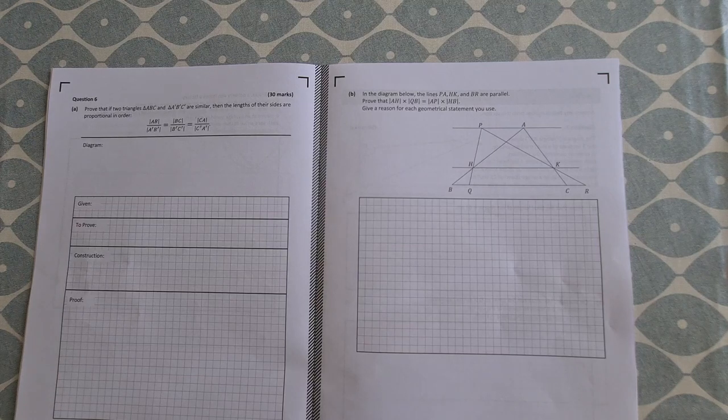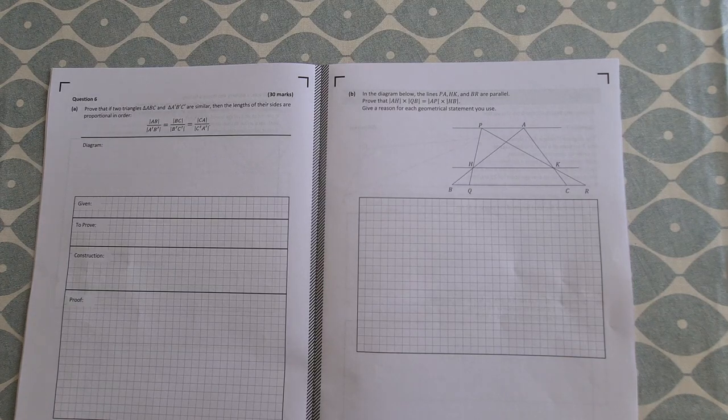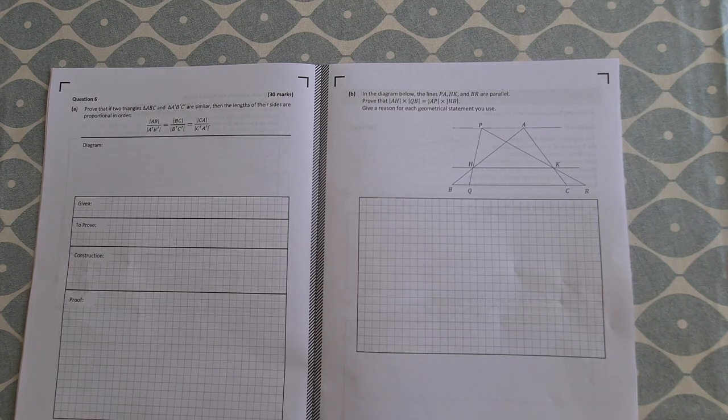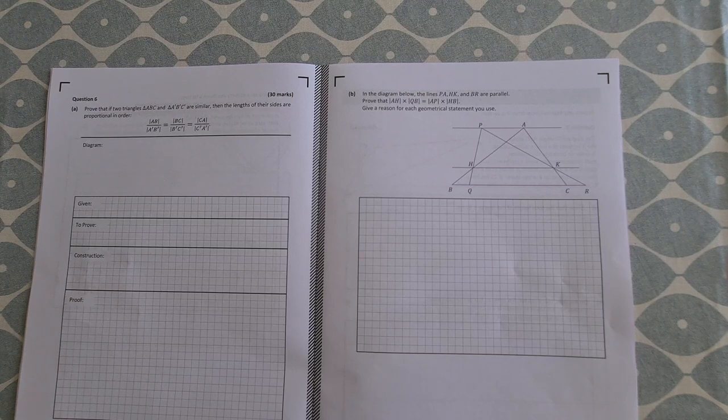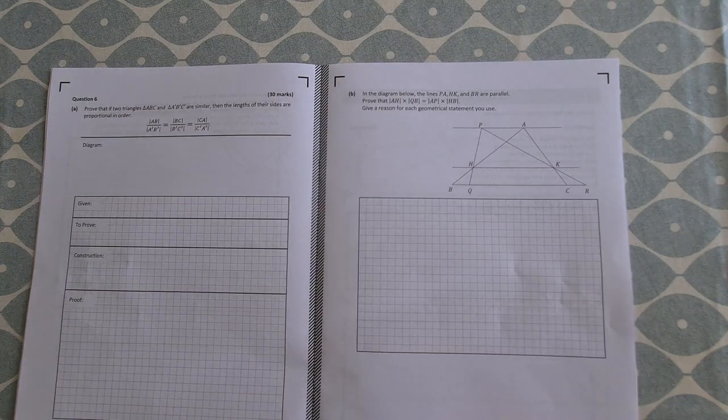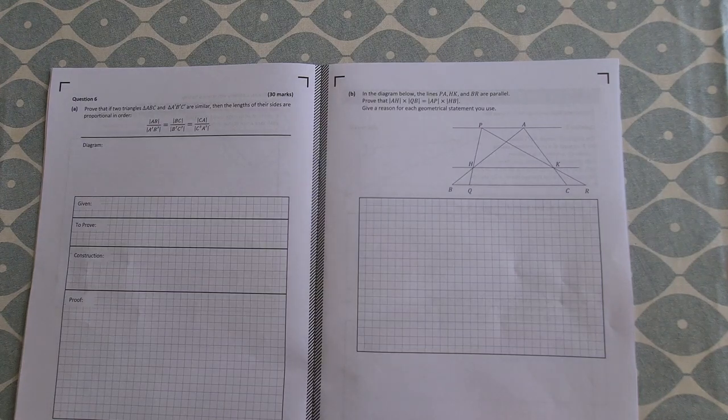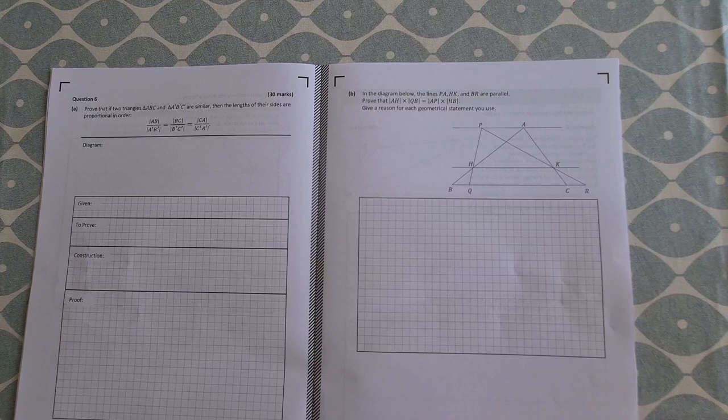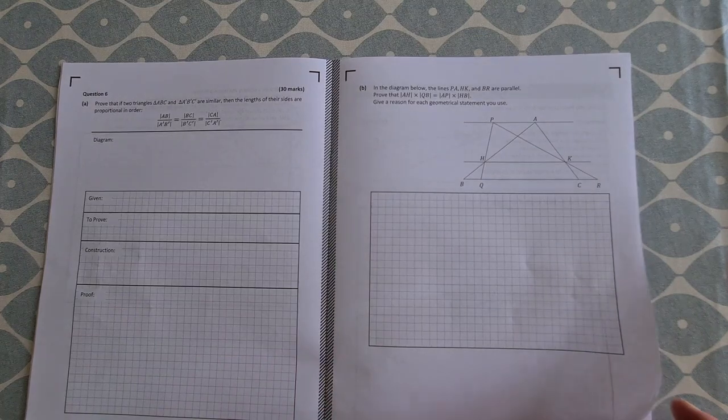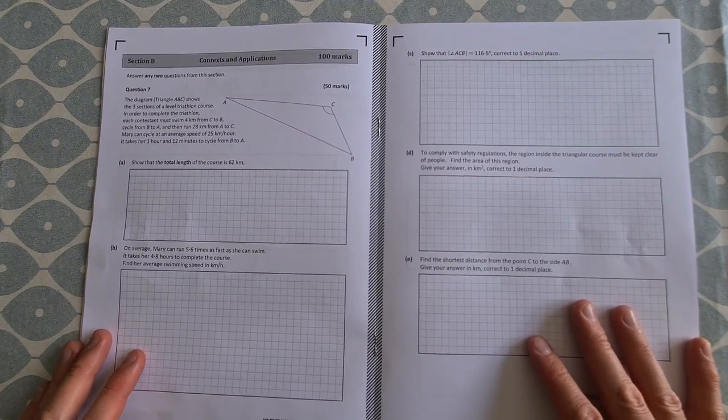In the diagram below we have some parallel lines. Prove that AH by QB equals AP by HB. So a similar enough kind of question, except you're trying to prove it in this context here. It's similar to your ratios, except they're products. But I think that a lot of students would be able to give a good attempt at that. So this might have been the hardest question so far in the paper, and I know a few students did leave this out. On to Part B. And a lot of students again said that Part B was easier than Part A.